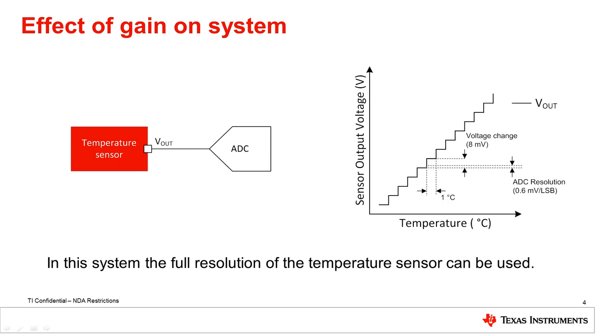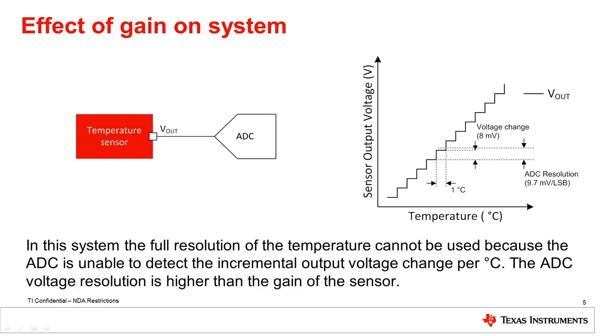In another system example, the ADC has the same reference voltage of 2.5 volts but a resolution of only 8 bits. This would have a voltage resolution of 9.7 millivolts per LSB. In this system, the full resolution of the temperature sensor cannot be used because the ADC is unable to detect the incremental output voltage change per degree Celsius, as shown in the graph.